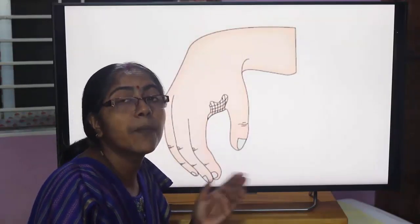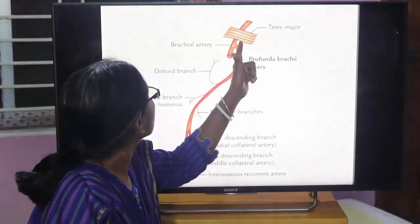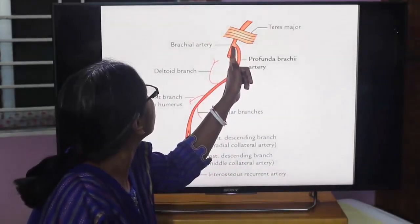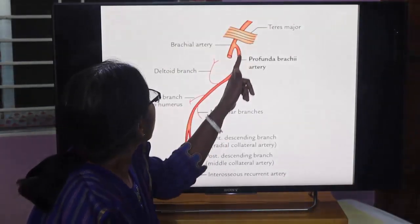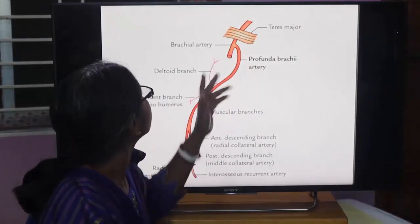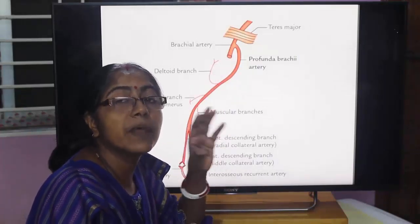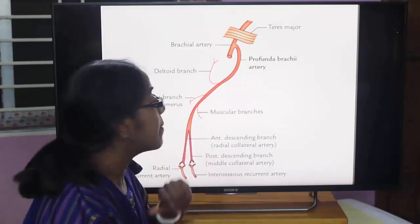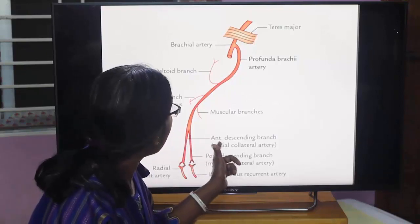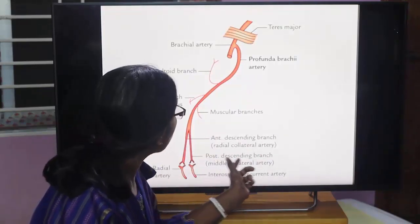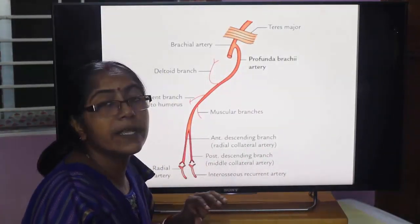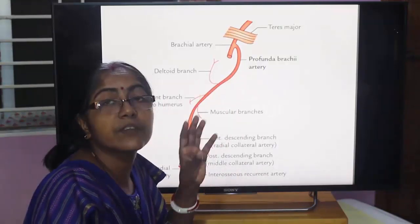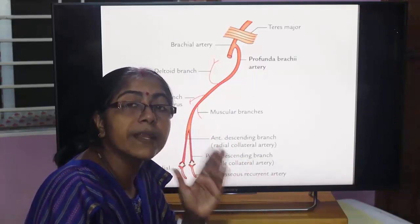Arteria profunda brachii: it is the largest branch of the brachial artery, arising from its posterior medial aspect below teres major. Its branches are: deltoid branch (ascending branch) — anastomoses with the descending branch of the posterior circumflex humeral artery; nutrient branch to the humerus; muscular branches; and terminal branches — the anterior descending branch (radial collateral artery) and posterior descending branch (middle collateral artery).